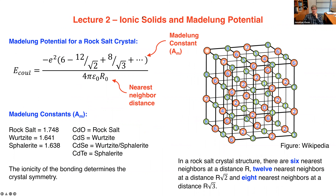Let's talk about how this affects bonding in crystals. There's something called the Madelung potential — an energy associated with the Coulomb force in a crystal. You can see the Madelung potential energy plotted, and it looks a lot like Coulomb's law but has a modifier called the Madelung constant. This modifier considers all of the nearest neighbors in that crystal and how each one of those Coulomb interactions contributes to the entire Coulomb force.